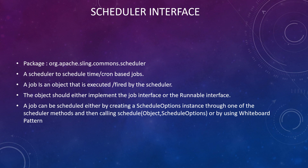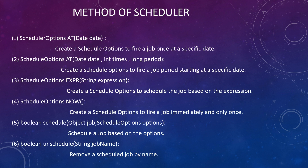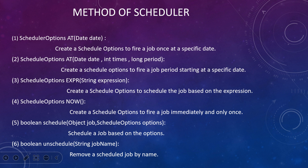The scheduler has methods by which we can easily schedule. The first one is add — this is nothing but the date. So you can schedule it through a date. For that we need to use the add method. This creates a SchedulerOptions to fire a job once at a specific date — it will only be called once.